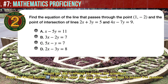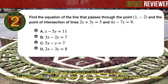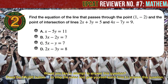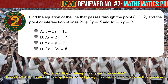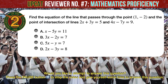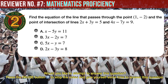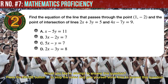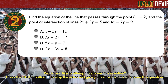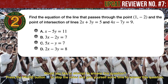Question number 2. Find the equation of the line that passes through the point x equals 1 and y equals minus 2, and the point of intersection of lines 2x plus 3y equals 5, and 4x minus 7y equals 9. A: x minus 5y equals 11. B: 3x minus 2y equals 7. C: 5x minus y equals 7. D: 2x minus 3y equals 8.